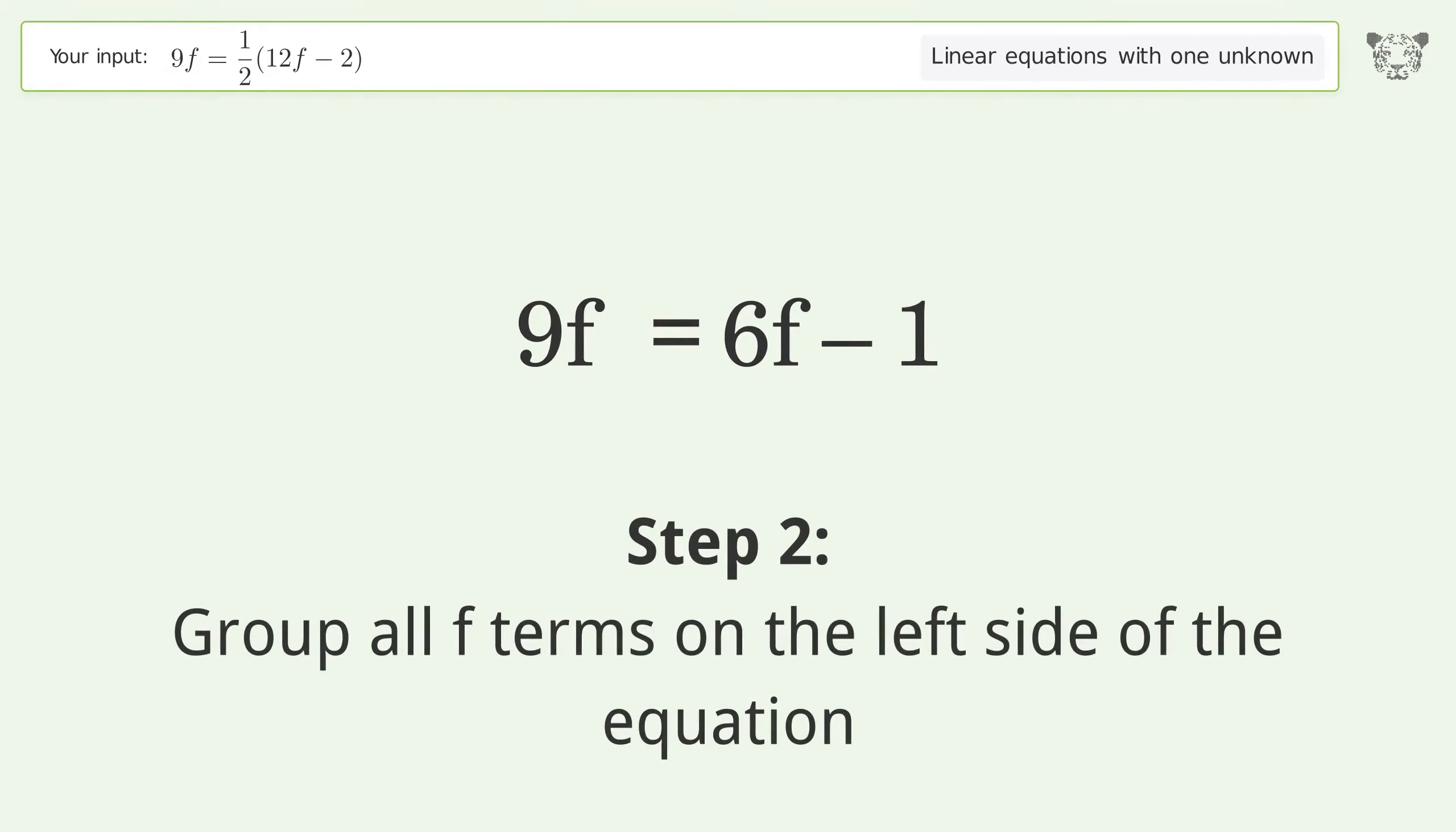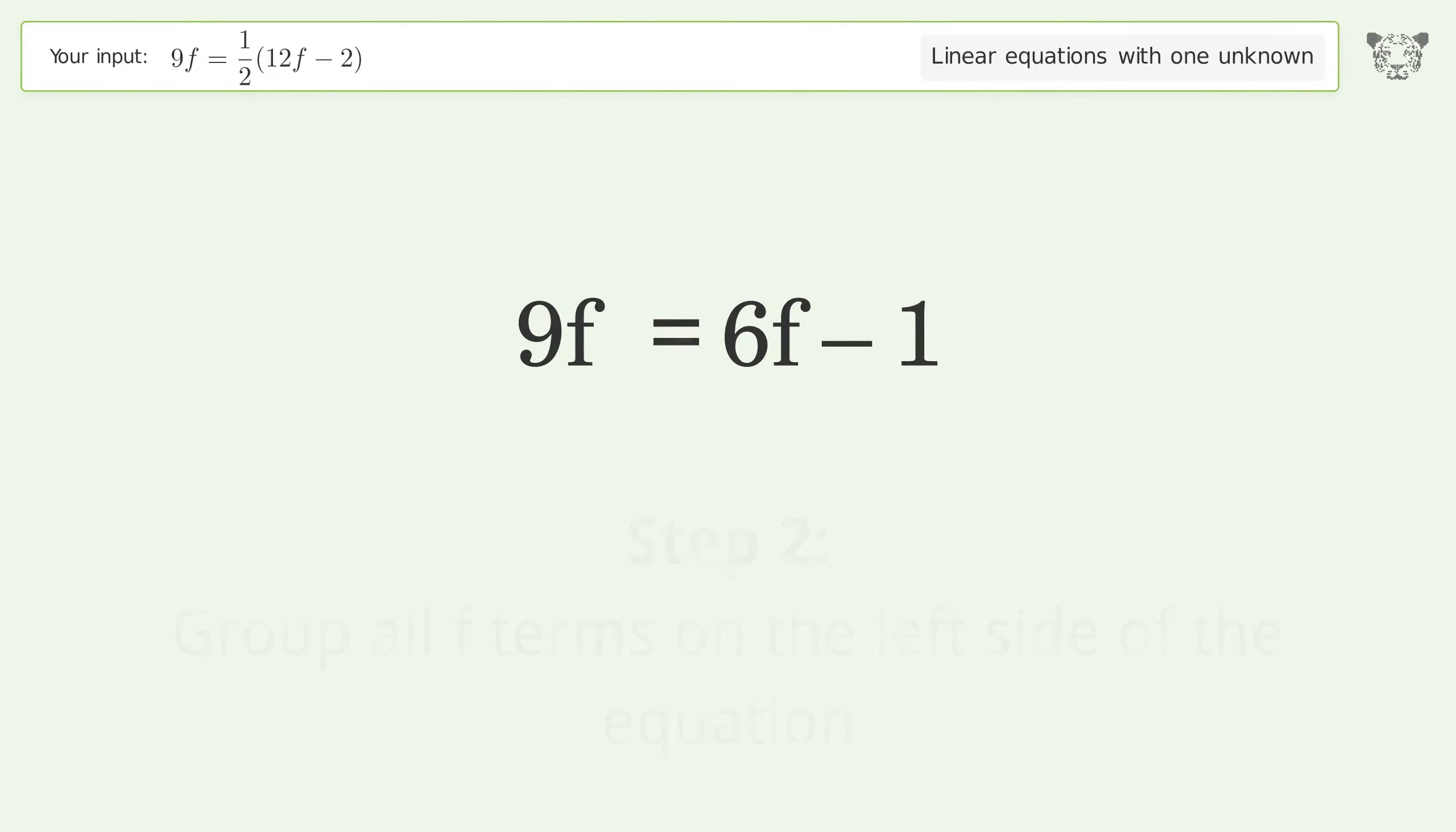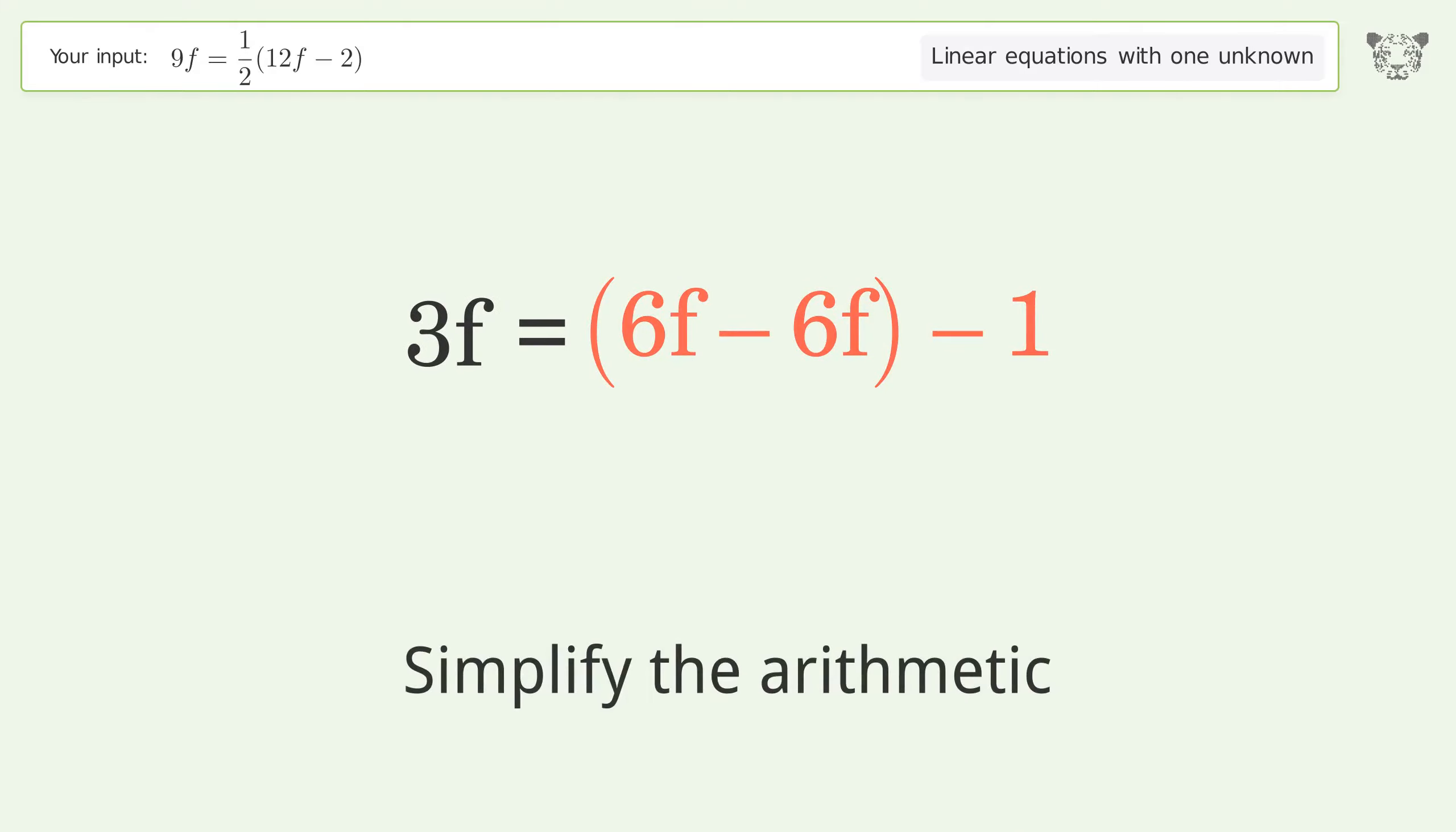Group all f terms on the left side of the equation. Subtract 6f from both sides. Simplify the arithmetic. Group like terms. Simplify the arithmetic.